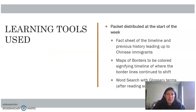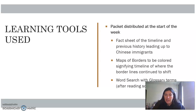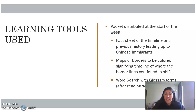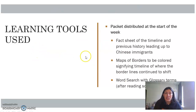The learning tools that I would use is to create a weekly packet that would be distributed at the start of the week. We would have a fact sheet of the timeline and previous history that we would be studying leading up to the Chinese immigrants, maps of the borders to be colored signifying the timeline of where the border lines continue to shift, and a word search with glossary terms after reading sources. We might look up terms like diaspora, xenophobia — which is the fear of people from the Pacific — and also discuss some of the Spanish terms that were used to describe these people.